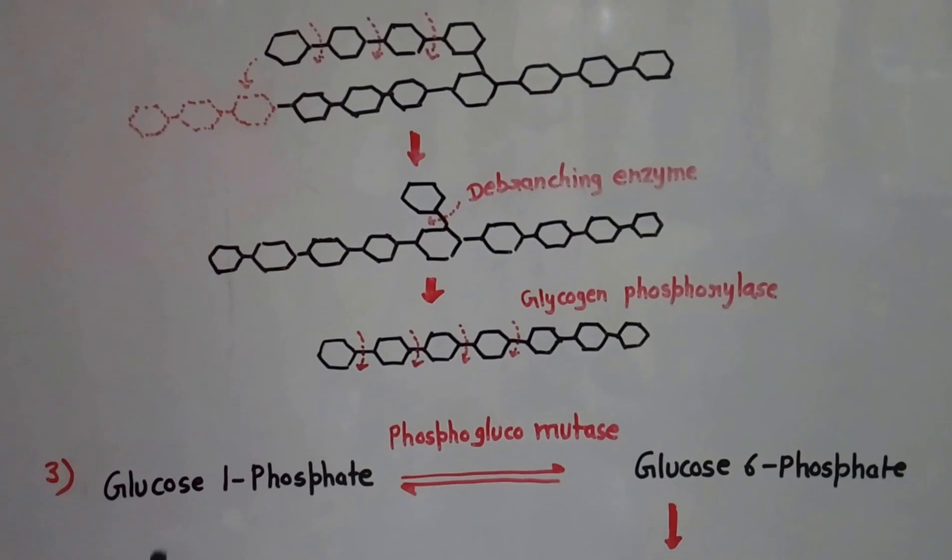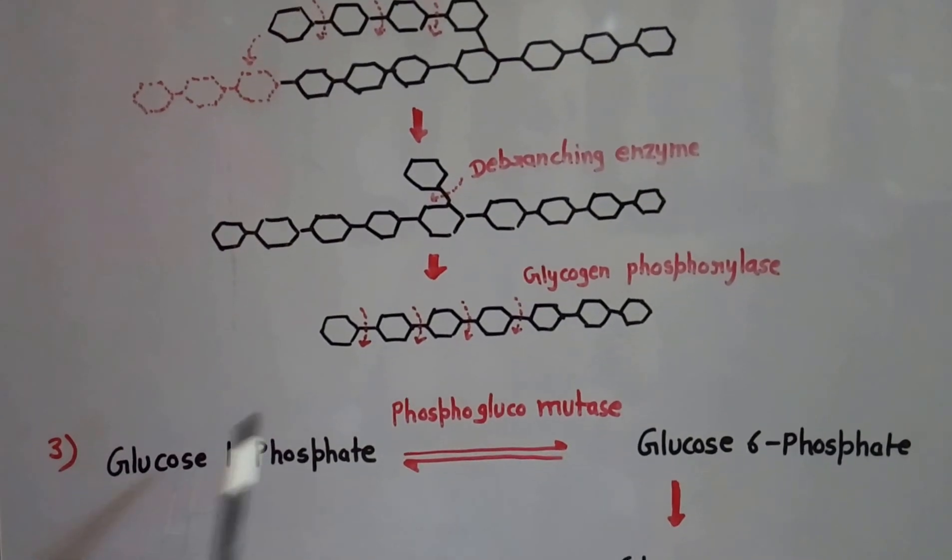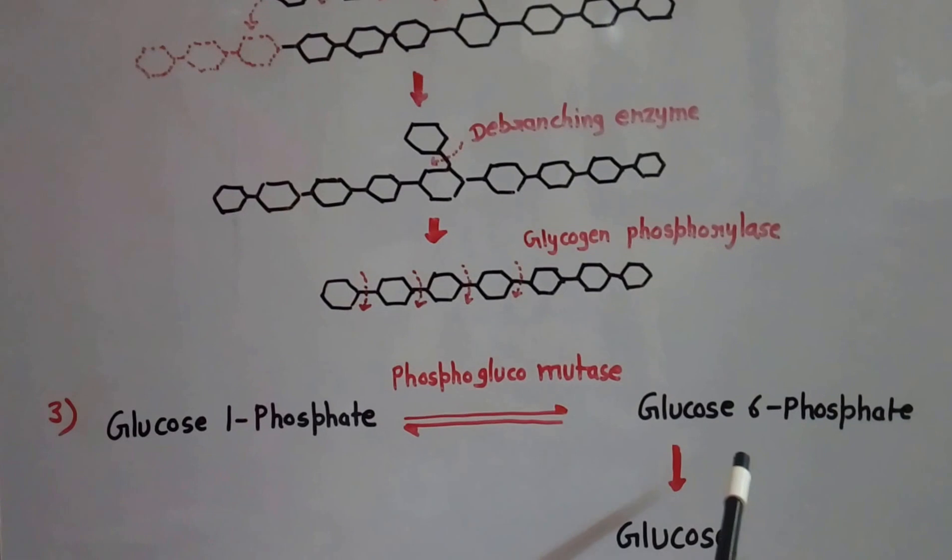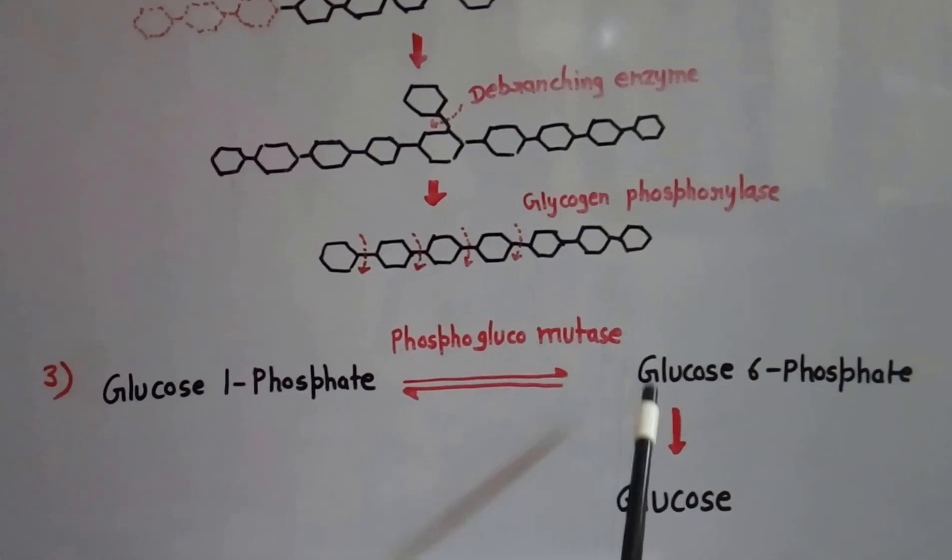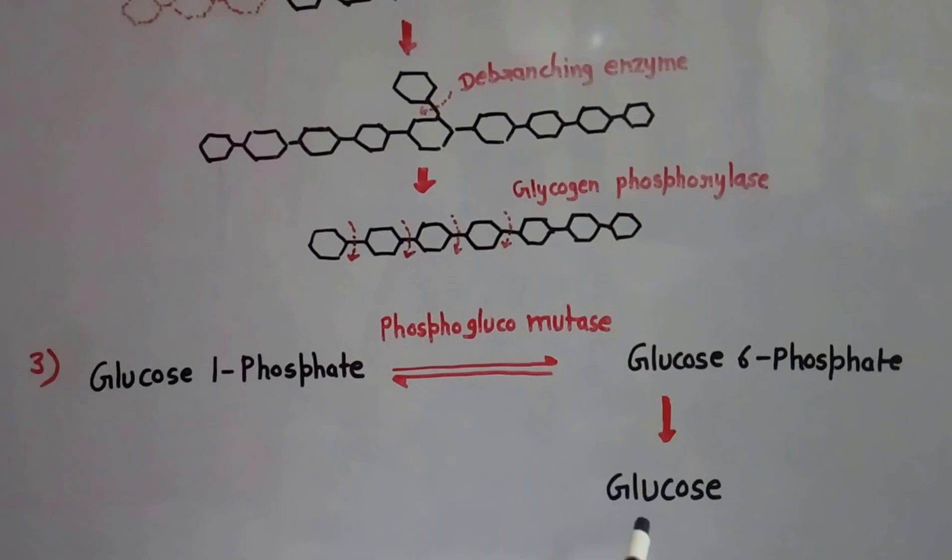The third step involves the conversion of glucose 1-phosphate to glucose 6-phosphate in the presence of enzyme phosphoglucomutase. This glucose 6-phosphate is converted to glucose, which is supplied to the blood.